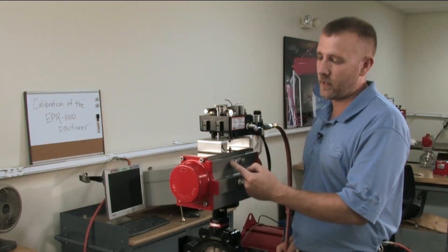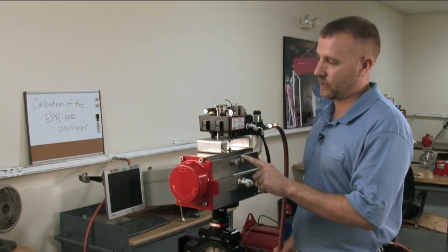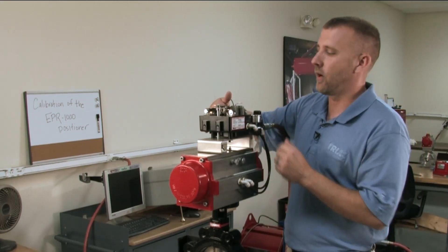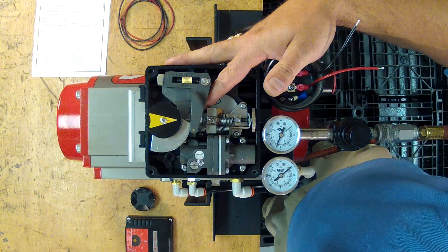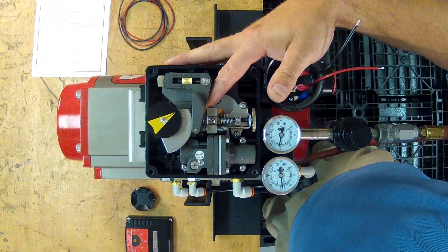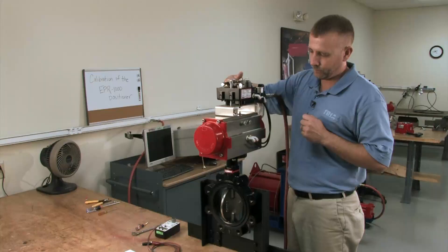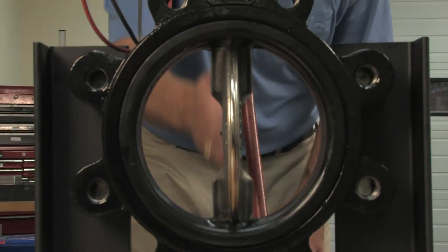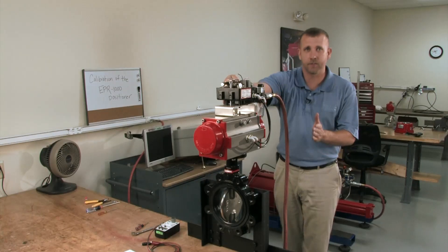This is our counterclockwise stop and our clockwise stop. So, we're going to run this thing counterclockwise by pulling on our counterweight, kind of manually. And you want a nice parallel disc here, a straight through flow, which that looks fine.